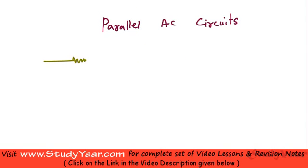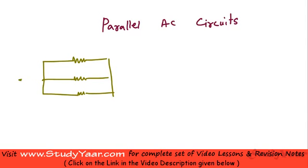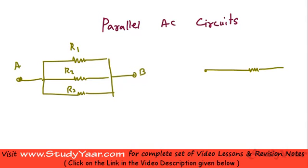In a DC circuit, if you have a set of parallel resistors — say three resistors R1, R2, and R3 connected across terminals A and B — and you want to find out the equivalent resistance between A and B, what do you do?